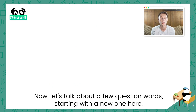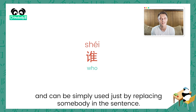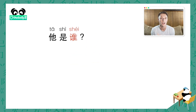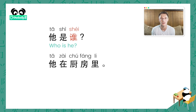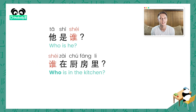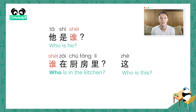Now let's talk about a few question words, starting with a new one: 誰, the question word for 'who' in Chinese, used simply by replacing somebody in the sentence. For example, 他是我爸爸 means he is my dad. If we replace 我爸爸 with 誰 and say 他是誰, now we're asking who is he. Similarly, 他在廚房裡 means he is in the kitchen — we can swap the person for 誰 to ask who is in the kitchen. You can also simply ask 這是誰 — who is this?